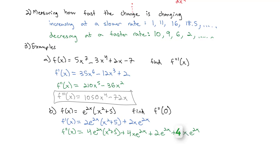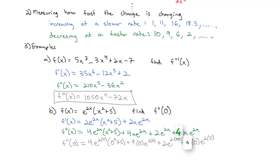Now that we have the second derivative, we're ready to evaluate it at x = 0. Plugging in 0: we get 4e^(0) times (0² + 5), plus 4(0)e^(0), plus 2e^(0), plus 2(0)e^(0). The terms multiplied by 0 drop out. We get 4 times 1 times 5, plus 2 times 1, which is 20 plus 2, giving us 22.